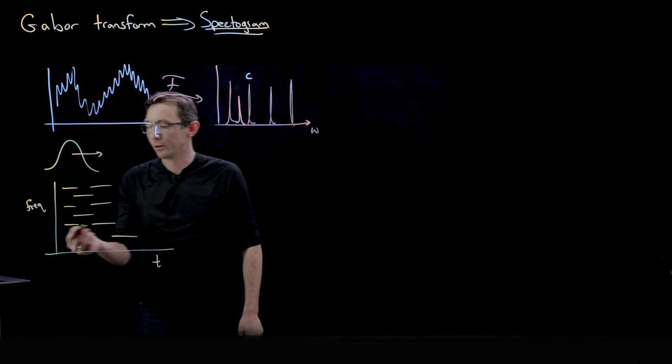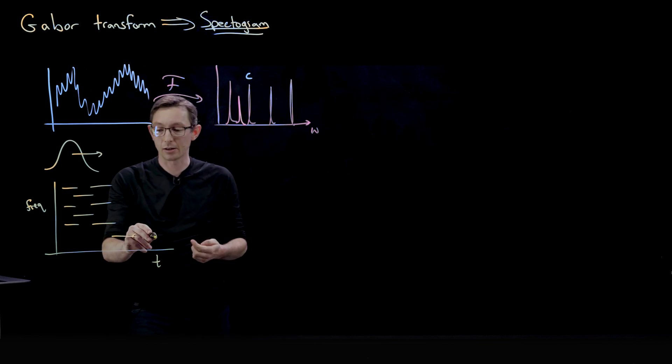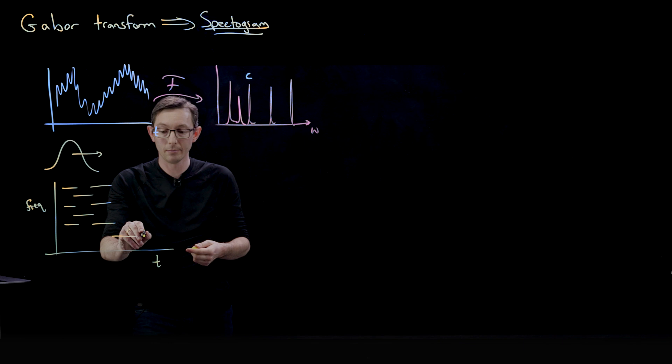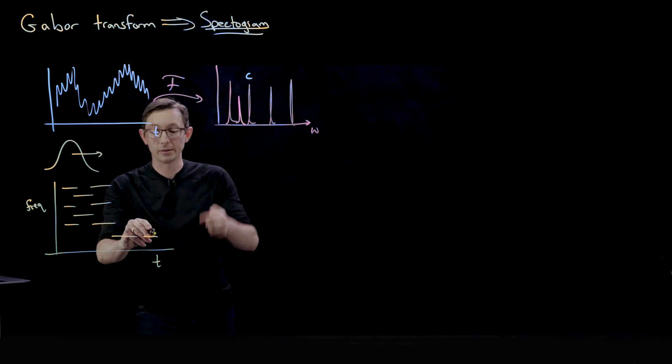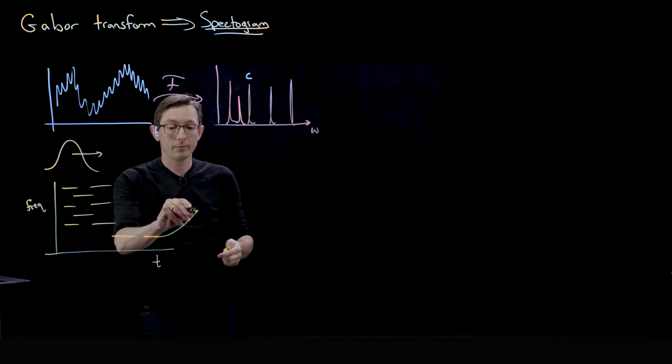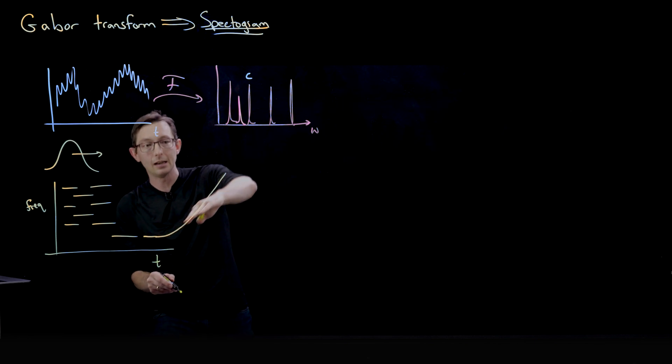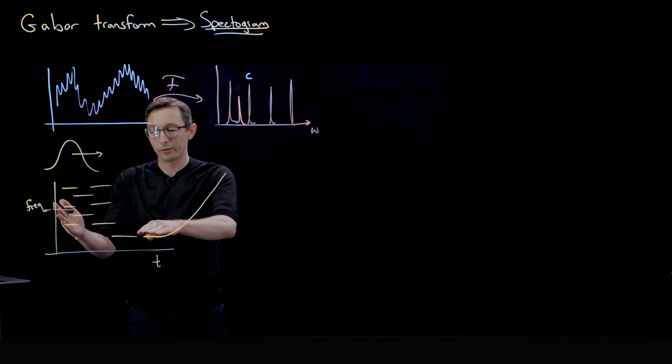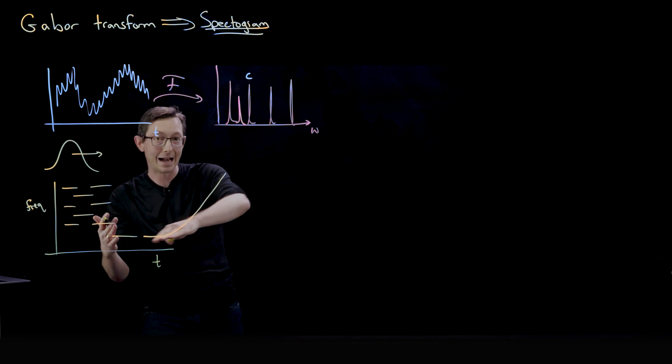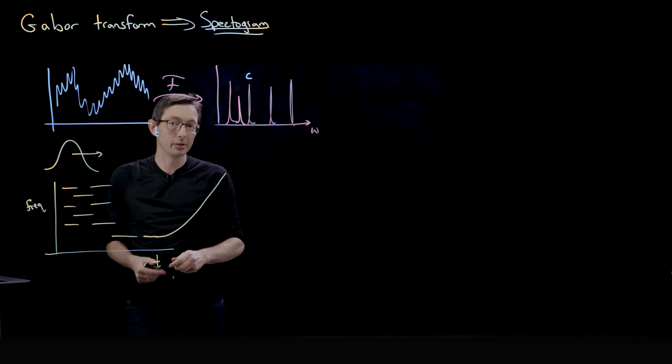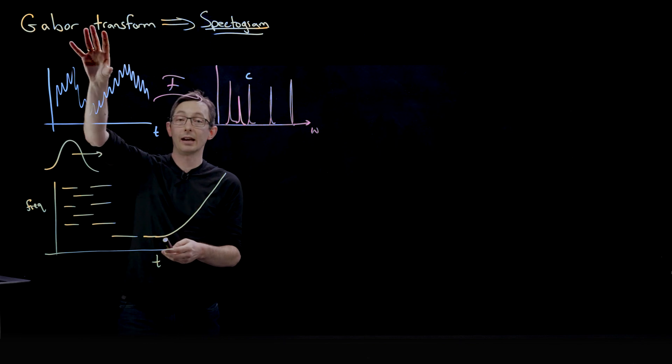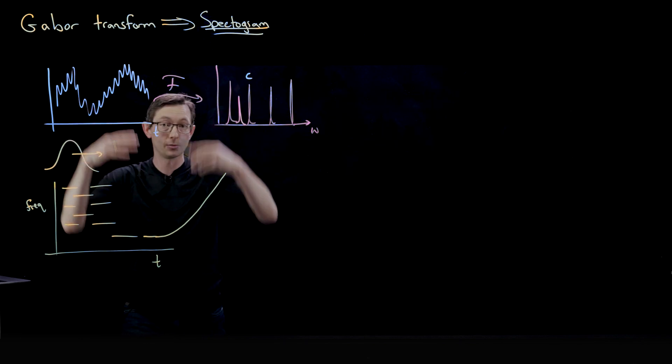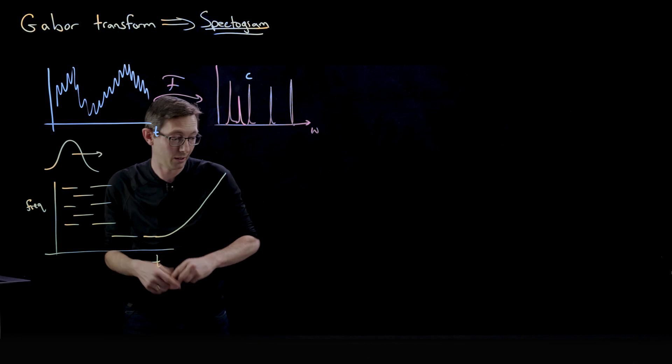For example, if I make some noise, I start with a low frequency, and then I increase the frequency, you can see kind of that temporal evolution of that frequency going from low to high in time. And that's really, really cool. And you can only get that using this kind of Gabor transform, which gives rise to the spectrogram.